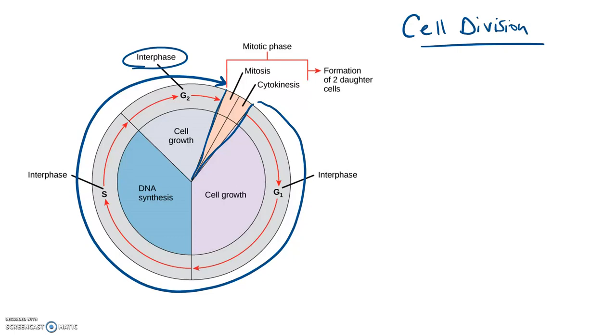So interphase is broken up into three separate components: G1, S, and G2. In G1, that's the first growth or first gap phase, and it doesn't mean that nothing is happening then. Actually, there are lots of things happening. For example, the individual building blocks that are necessary in the next phase are being accumulated and built up, as well as the cell is producing ATP energy that's going to be needed later on in the process.